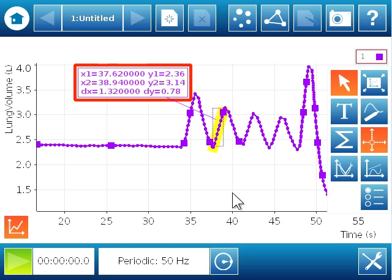So lung volume, being my value on the y-axis, is the change that I'm interested in. So my difference in y is 0.78 liters, the volume of air that was moved into my lungs during that time of inhalation that I've selected on the graph.